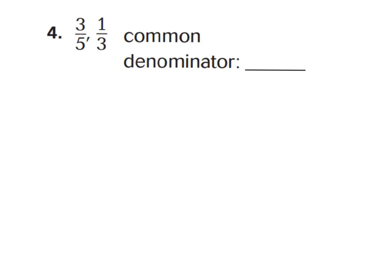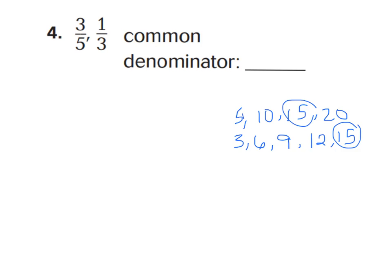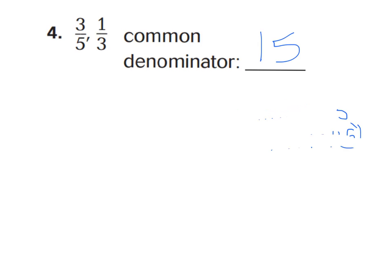Let's take a look at number 4. We have the denominators of 5 and 3. They're not common yet, so let's make them common. Think of your multiples of 5: 5, 10, 15, 20. And multiples of 3: 3, 6, 9, 12, 15. I see a common denominator — 15 would be my common denominator. Now let's find equivalent fractions with a denominator of 15.